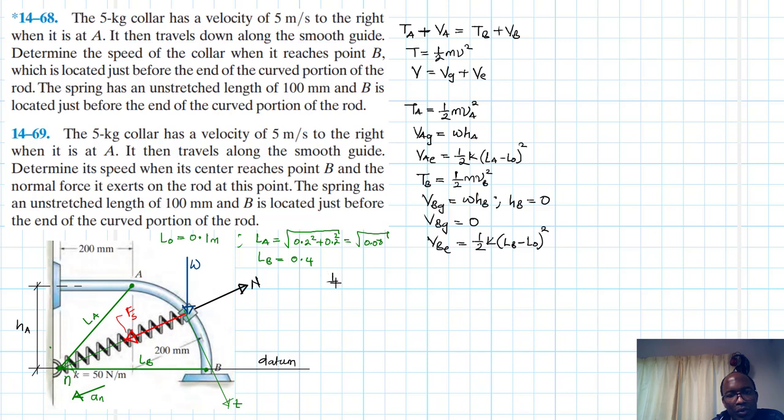And VB_elastic is just half k times (LB minus L_naught) squared. So we've written everything. Let's put them in the equation. We have one over two M VA squared plus W hA plus half k (LA minus L_naught) squared equals half M VB squared plus W hB plus half k (LB minus L_naught) squared. We said this part is zero.